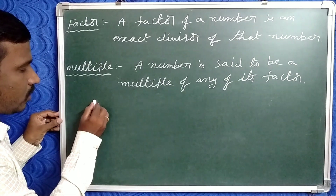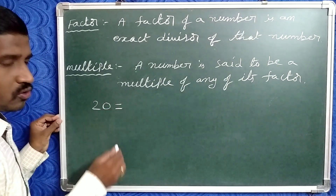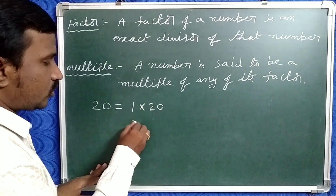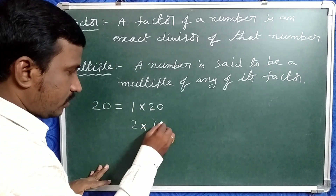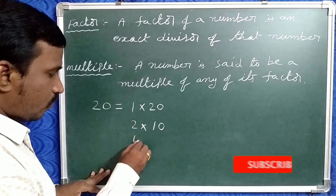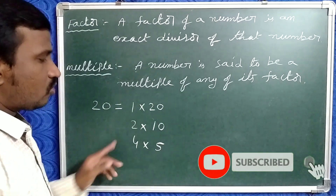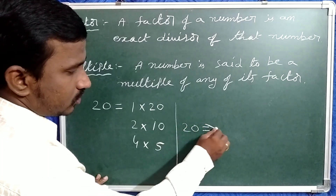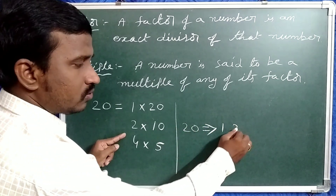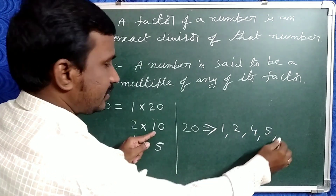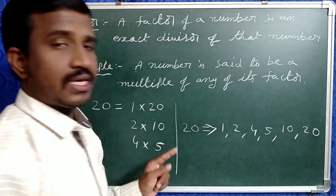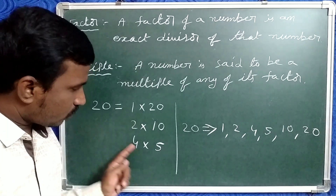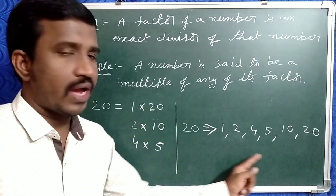Suppose given: write all factors of 20. From 1: how many ones are 20? 20. So 1 into 20. Next, 2: how many 2's are 20? 10. So 2 into 10. Next 3 — not a divisor. Then 4: 4 fives are 20. So 4 into 5. Now write the factors of 20 using the necklace method: 1, 2, 4, 5, 10, and 20. These are all the factors of 20.